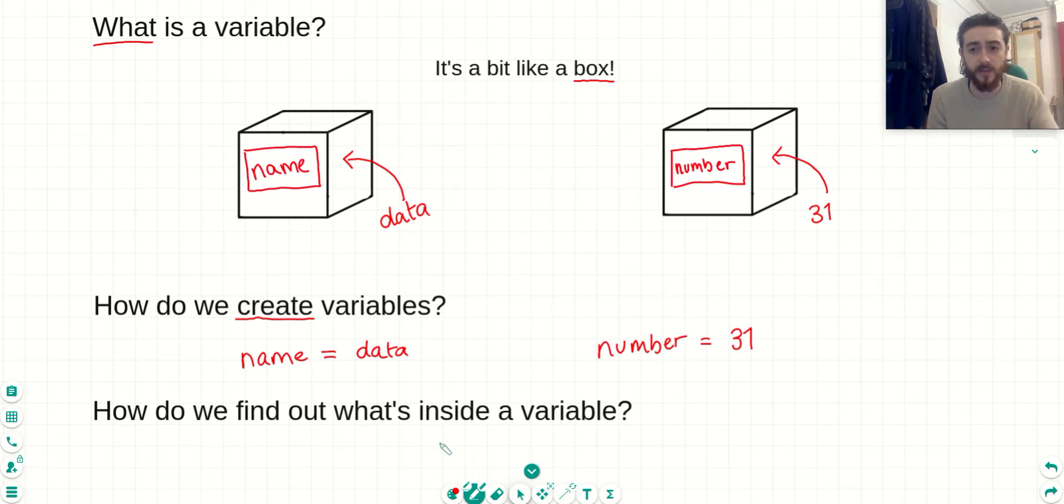So now we know how to create variables. How do we look inside of our variables when we're writing code so that we know what they're equal to and what data is inside of them? We have a nice command in Python called print. What print will do is we put in next to print in brackets, the name of a variable, in this case number, close the bracket. And this will print out the value of number or the data that's inside of number.